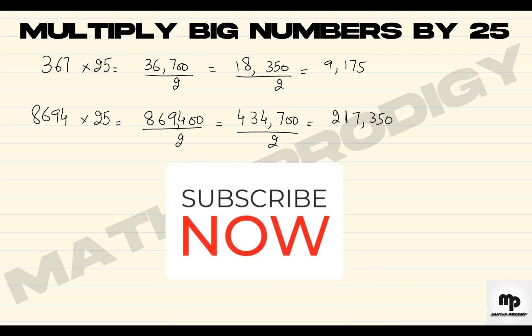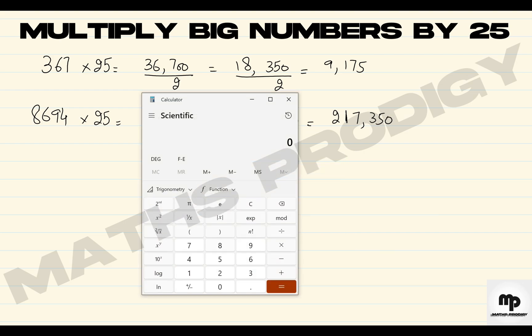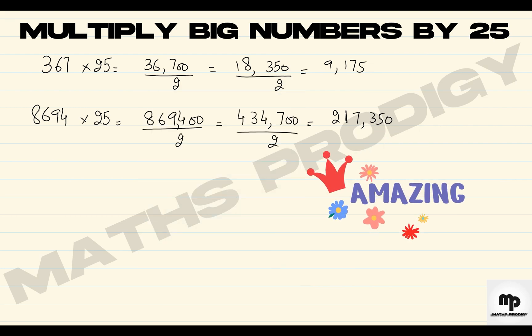You can check this on the calculator. 8,694 times 25 is equal to 217,350. Keep watching the video till end. Watch and you'll learn that we can multiply 25 with even more bigger numbers.